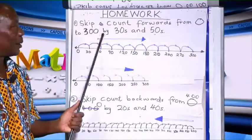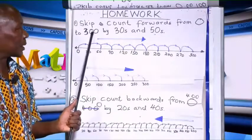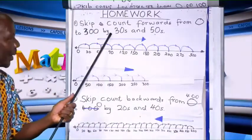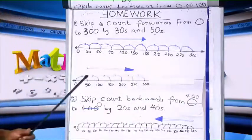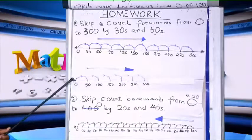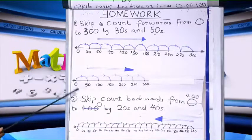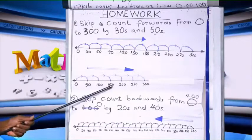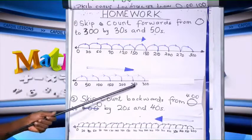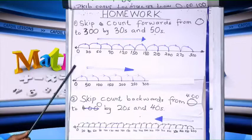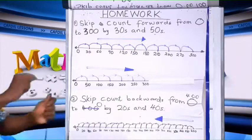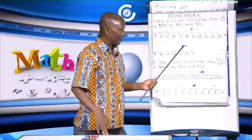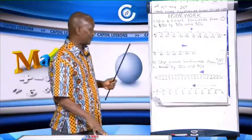We move in this direction until we get to 300. That is skip forward from 0 to 300 by 30s. And by 50s, we look at 0, 50, 100, 150, 200, 250, 300 — forward. So we are moving in this direction, that is the arrow pointing that way.